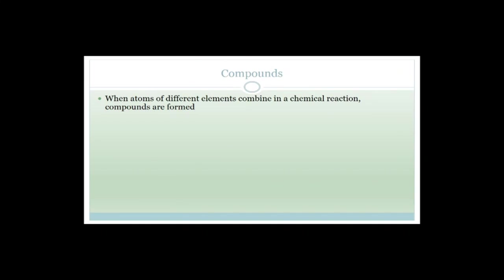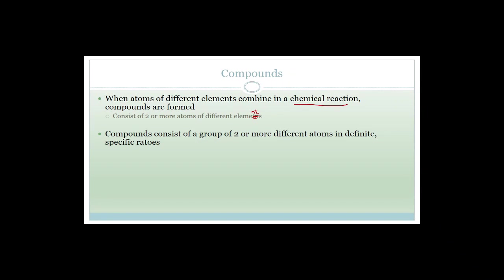So what do the atoms do? The atoms join or combine to form what is called a compound. Atoms of different elements combine in a chemical reaction and then compounds are formed. We're going to talk a little bit about physical changes and chemical changes later. When atoms of different elements combine in a chemical reaction, compounds are formed and they consist of two or more atoms of different elements.